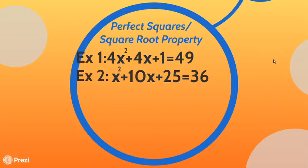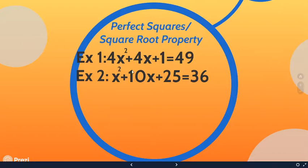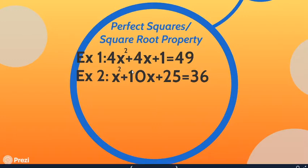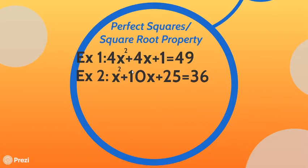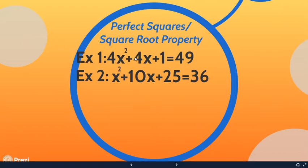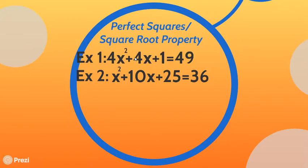A perfect square is a number that you can take the square root of. What we have here in both of these is something called a perfect square trinomial, which means that after we factor, you will be able to rewrite it as a perfect square. After that, we're going to solve using the square root property, which I've already taught you how to do before.